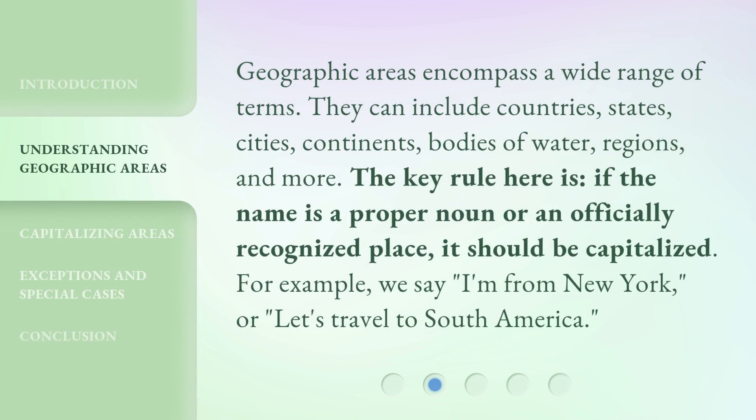Geographic areas encompass a wide range of terms. They can include countries, states, cities, continents, bodies of water, regions, and more. The key rule here is: if the name is a proper noun or an officially recognized place, it should be capitalized. For example, we say, 'I'm from New York,' or, 'Let's travel to South America.'